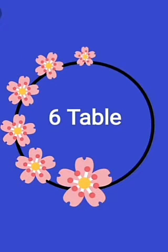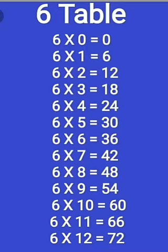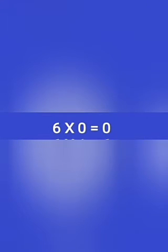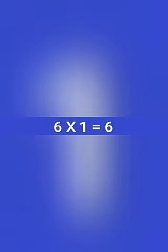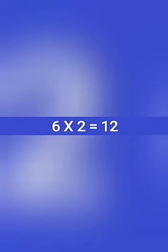Hi kids, good morning! Today we are going to learn the 6 times table. Six zeros are zero. Six ones are six. Six twos are twelve.